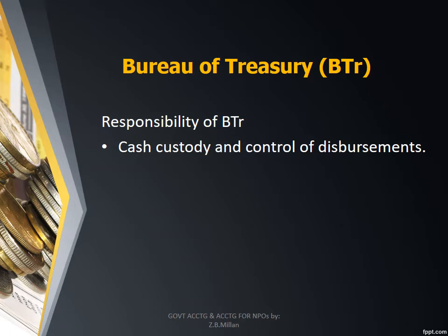The Department of Budget and Management is tasked to control and monitor appropriations and allotment. The Bureau of Treasury is responsible for cash custody and control of disbursement. The Bureau of Treasury plays a vital role in the cash operations of the national government — it functions as the cash custodian of the government and is authorized to receive and keep national funds, manage and control the disbursement thereof, and maintain accounts of financial transactions of all national government offices, agencies, and instrumentalities.